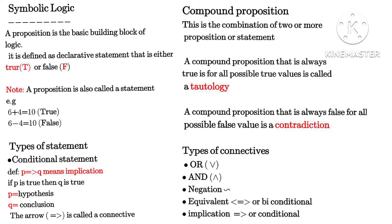Now we have types of connectives. The first type is 'or,' represented with the symbol ∨. We also have 'and' and negation. 'And' is always called a conjunction and 'or' is always called a disjunction. Negation is also known as 'not.' Equivalence is known as biconditional. Implication is known as conditional, or simply 'implies.' Equivalence is also known as double implication because we are dealing with two implications.